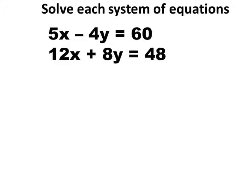Let's look at this one. What we really want to do here is to make them the same. Let's look at the negative 4Y and positive 8Y. Let's make them so that they are the same number — let's just make it 4 to start out with. Then we'll worry about positives or negatives.